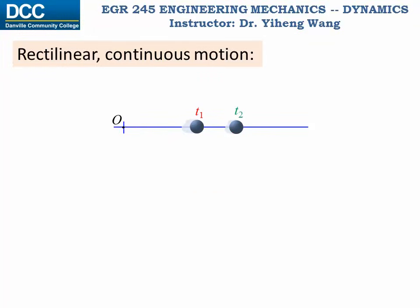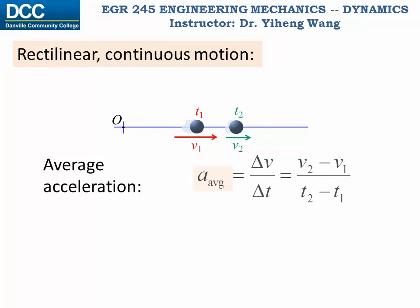If at time t1 the object has a velocity of v1, and at time t2 its velocity is v2, then the average acceleration is defined as the change in velocity over the change in time.